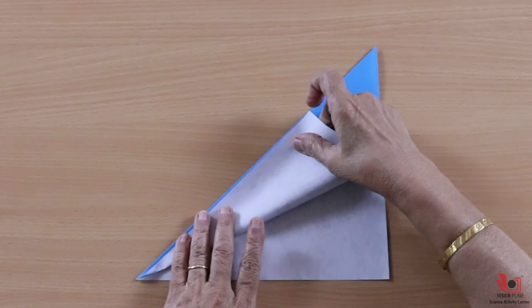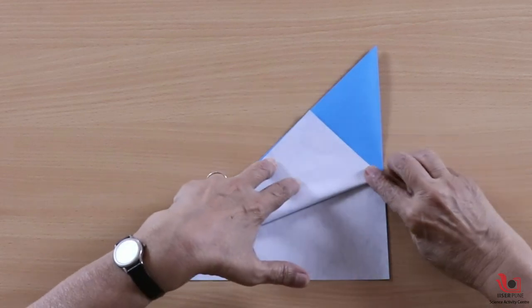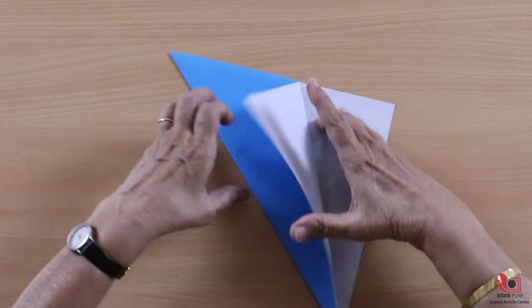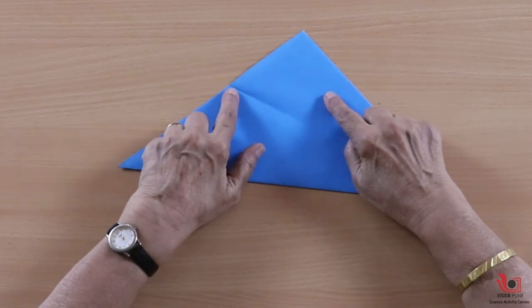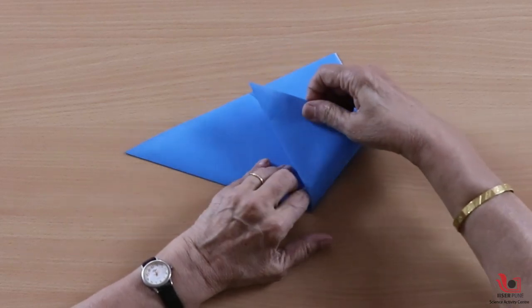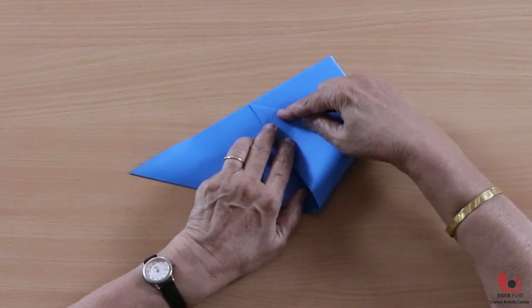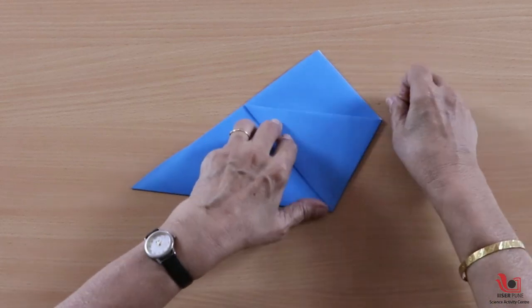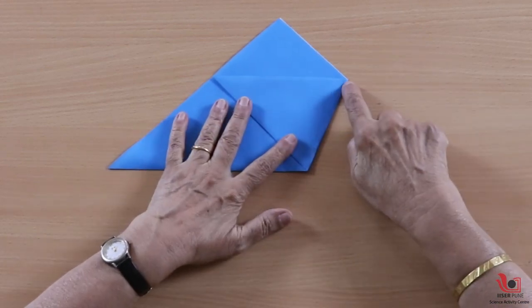I will not make a crease but will just mark this point because I want this point only. So I got this point. Now what I will do is join this corner to this corner and make a crease. After making this crease, I got this point.